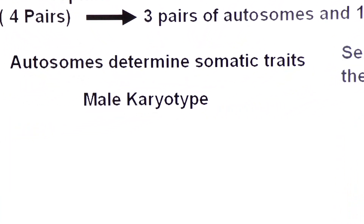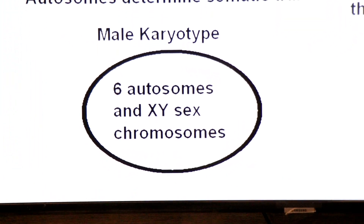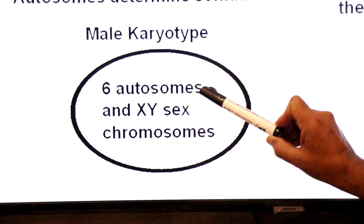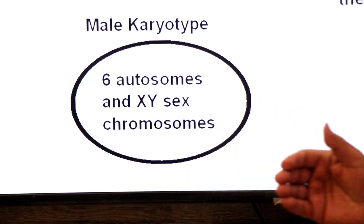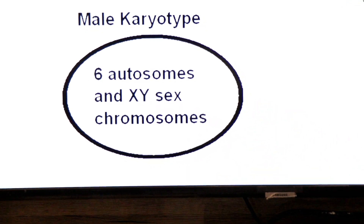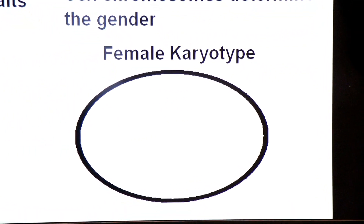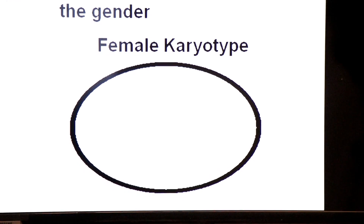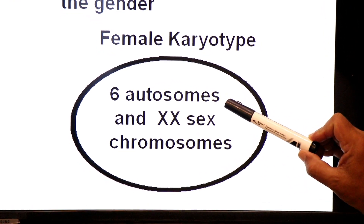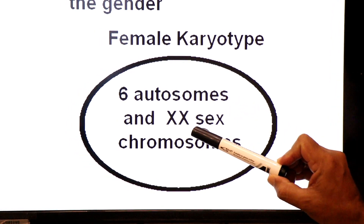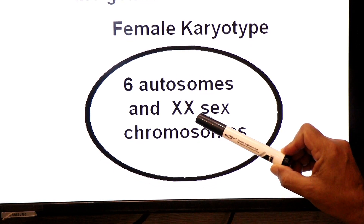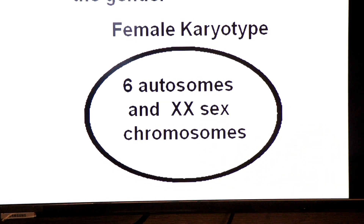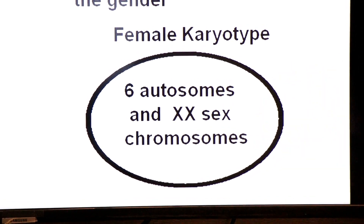Ab hum male karyotype of Drosophila padhenge. Look at the male karyotype of Drosophila: six are the autosomes which determine somatic traits, and there is one pair of sex chromosomes XY that will determine the sex of offspring. Ab aate hain female ke karyotype pe. In the female karyotype of Drosophila fruit fly, six are the autosomes and one pair of sex chromosomes XX, which will determine the sex of an offspring as female.